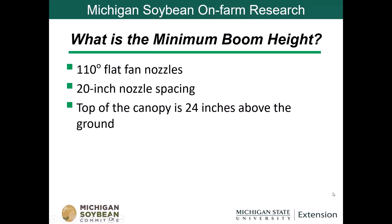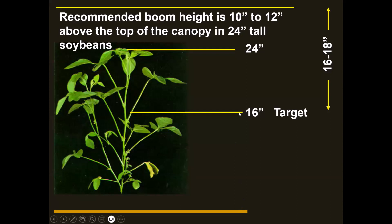This example shows why we do that. Our overlap is important to get uniform distribution and pattern. We target the midpoint or top third of the canopy rather than targeting the top. For example, with 110-degree flat fan nozzles, 20-inch nozzle spacing, and a canopy that's 24 inches tall, our target is about 16 inches off the ground. With a minimum boom height of 16 to 18 inches, we really want to run that boom about 10 to 12 inches above the top of the canopy. It doesn't give you a lot of room for error, but it gets the product where we need it with uniform distribution.